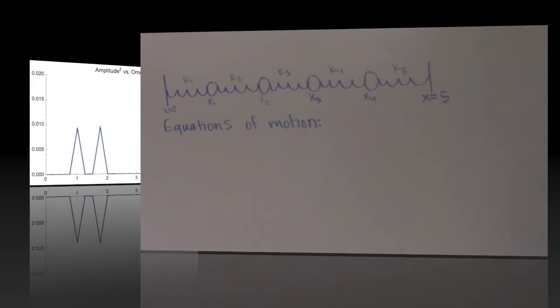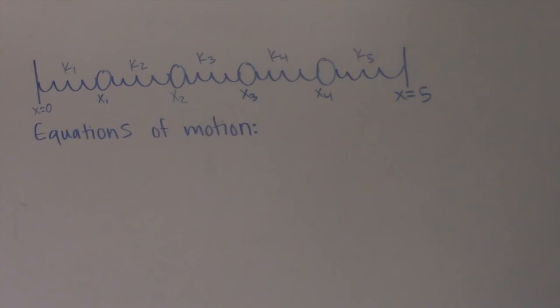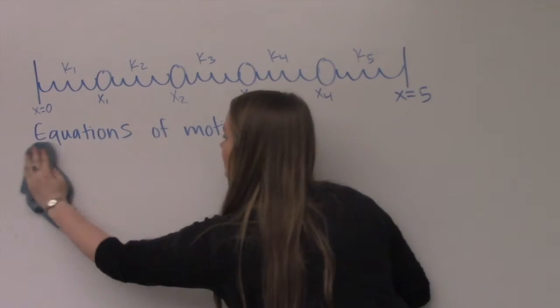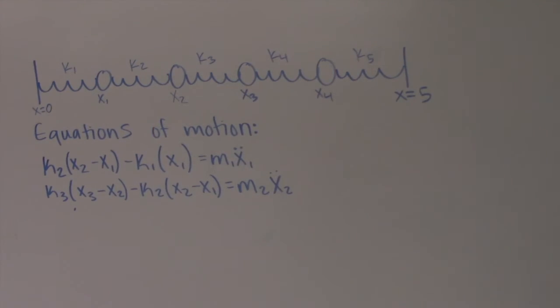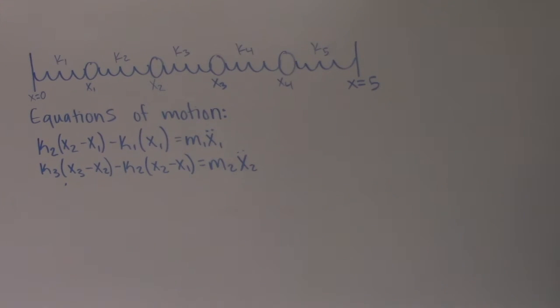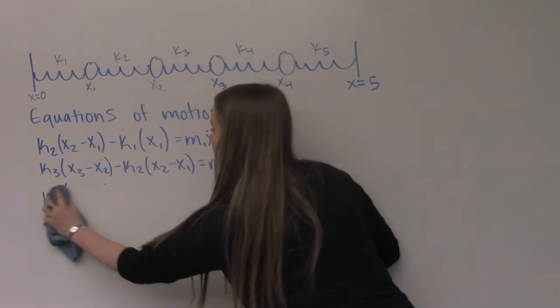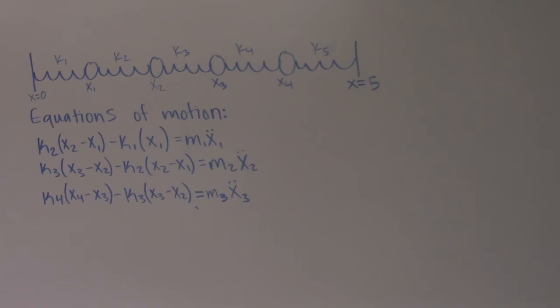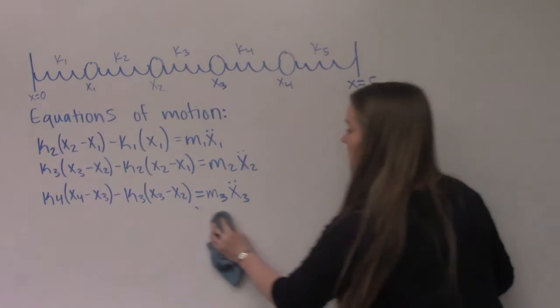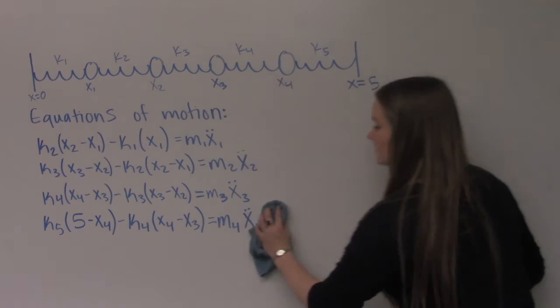Now let's take a look at a system with four masses and five springs. Our first two equations of motion will be the same as our two mass and three spring system, but the constant three that accounted for the non-moving wall on the right is replaced with the position of our new moving mass three. Our third equation of motion follows the same rules as the second, and then our fourth equation of motion will now take into account the non-moving wall at x equal to 5.